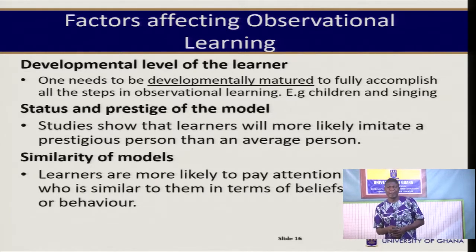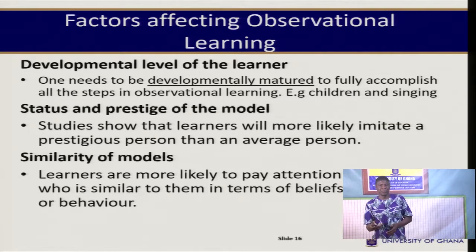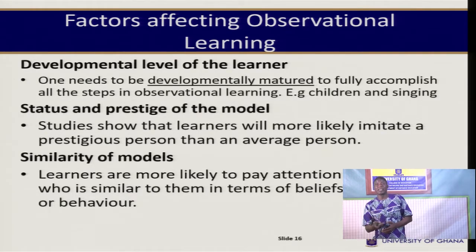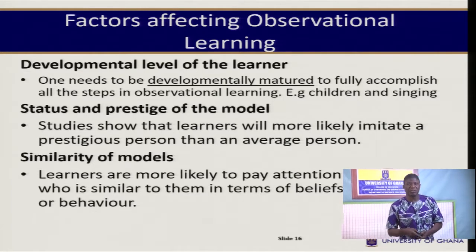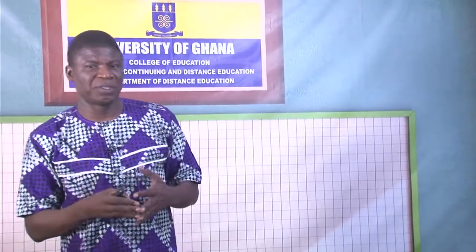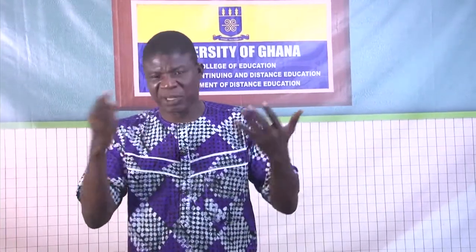The prestige of the model is also very important. Studies show that learners are more likely to imitate a prestigious person than an average person, though what counts as prestigious depends on the person and their culture. Additionally, similarity of the models matters — learners are more likely to pay attention to a person who is similar to them in terms of beliefs, attitudes, and behavior. These are important factors that affect observational learning.